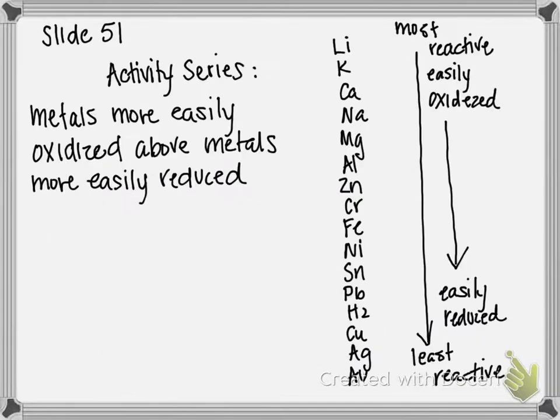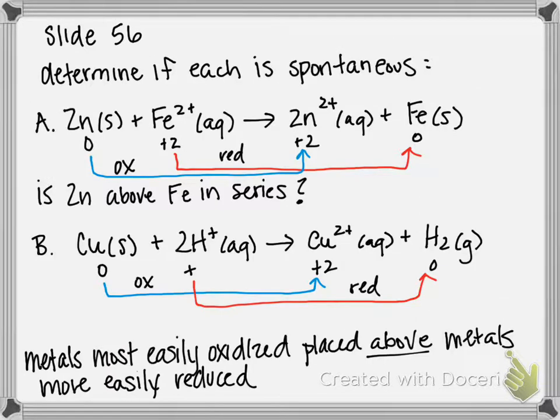So let's go back to our activity series. Here's zinc, and iron is right here. So that means in a reaction, zinc is going to be oxidized over iron. And in fact, that's what happens. Zinc is oxidized, iron is reduced. So yes, this reaction is spontaneous, meaning it occurs without any outside help. It naturally occurs.